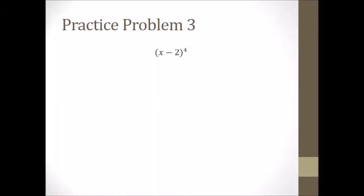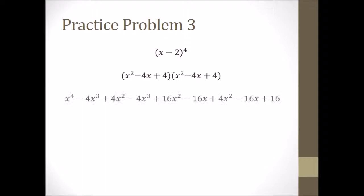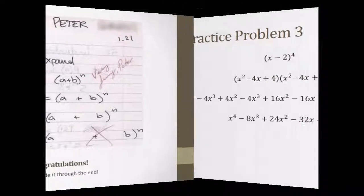For our final problem, X minus 2 to the fourth power: remember that X minus 2 squared was our first practice problem. So X minus 2 to the fourth is two trinomials multiplied together. Using the trinomial process — the first term goes into all three terms of the other parentheses, then the second term does the same — simplify that, combine your like terms, and you're finished.